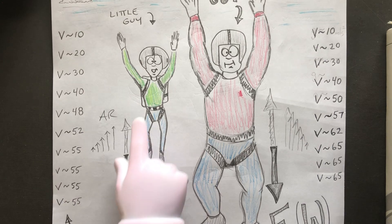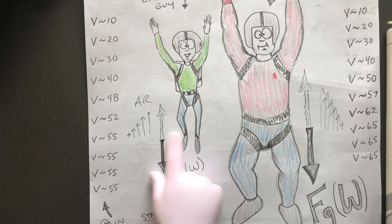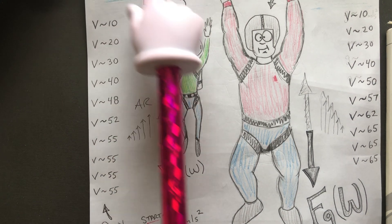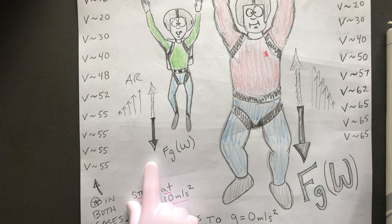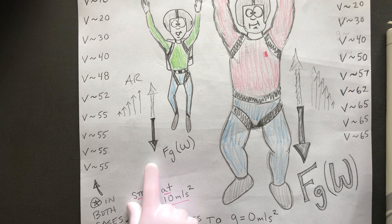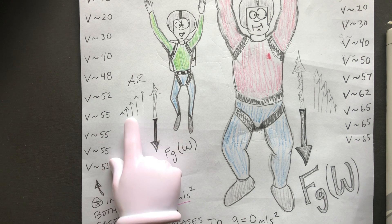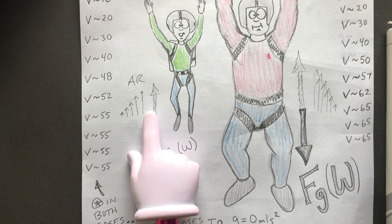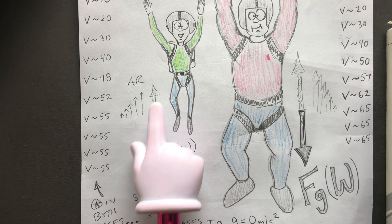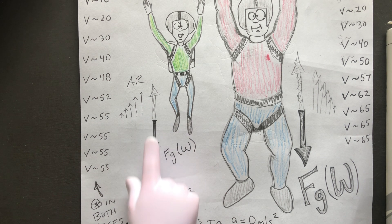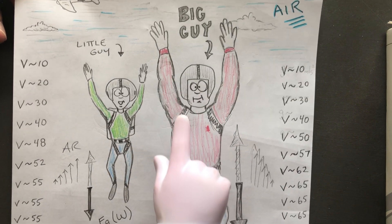Both the little guy and the big guy have different weights. For the little guy, the moment he jumps out of the airplane, his weight is what causes him to accelerate towards the ground. But as he falls faster and faster through the air, more and more air resistance acts against him, until eventually the air resistance equals his weight — like putting your hand out of a moving car.